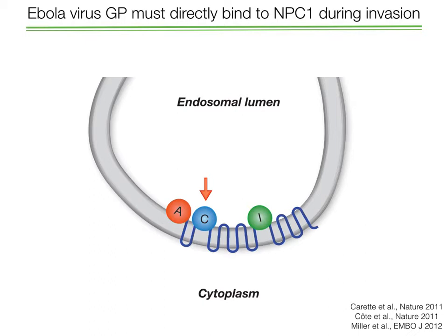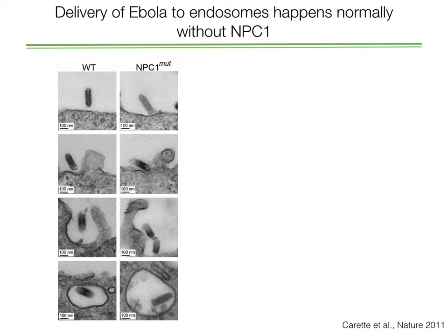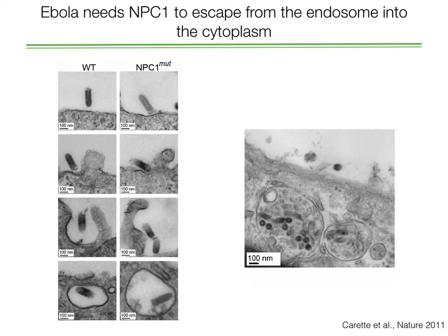Specifically, Ebola binds to the second domain of NPC1 shown with the red arrow — domain C — and this binding is absolutely crucial for the invasion and infection process. When we generate cells that don't express NPC1, the virus is still able to bind to these cells and be engulfed, so delivery to endosomal compartments happens normally without NPC1. Instead, what happens is that the virus accumulates in large structures and can't escape out of the endosomal compartment into the cytoplasm. So the role of NPC1 is to allow the virus to fuse its membrane with the endosome membrane to deliver its payload.